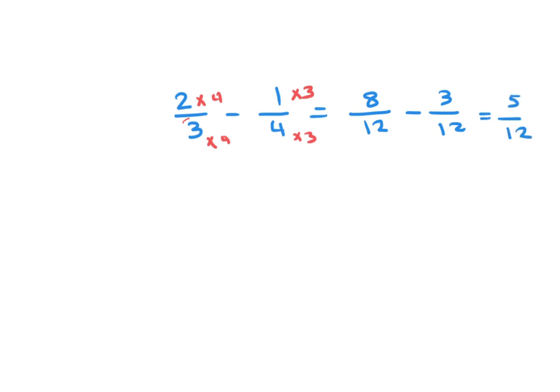8 over 12 minus 3 over 12 equals 5 over 12. Understood? Yes. Now if we have a mixed number — for example, 2 and 1 over 4 minus 1 and 1 over 5 — how do we subtract?